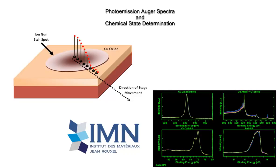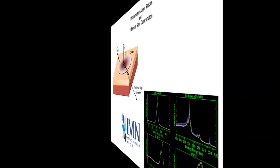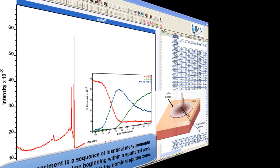The XPS of copper finds it difficult to discern the difference between metallic forms of copper and copper(I) oxide.